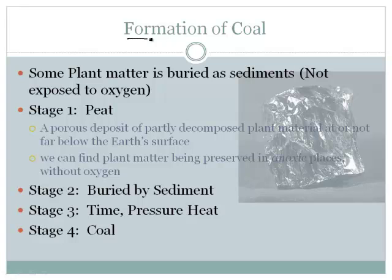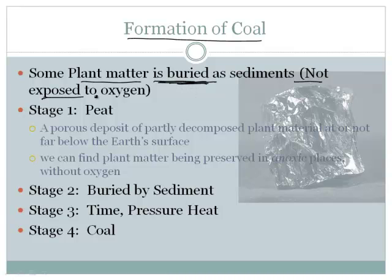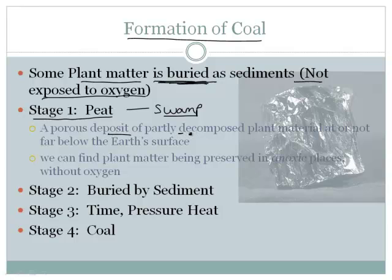Let's talk about the formation of coal. Basically, some plant matter gets buried. It's very important that the plant matter gets buried, because if it just decays on top of the ground it will oxidize and will not turn into coal — it must not be exposed to oxygen. This typically happens in swamps, where the plant matter gets buried under water. The result is peat: a porous deposit of partially decomposed plant material at or near the earth's surface, preserved in anoxic — meaning without oxygen — conditions.